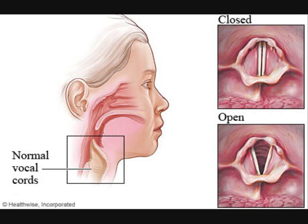Here on the left you can see where the vocal cords are situated in the larynx, or voice box. On the right hand side you can see the vocal cords themselves. They can be either open or closed depending on the type of sound spoken, and their job is to produce sound so that we can speak. They vibrate because of the air flowing out of the lungs, and these vibrations create the sounds with which we speak.